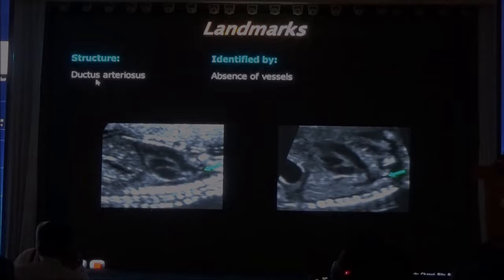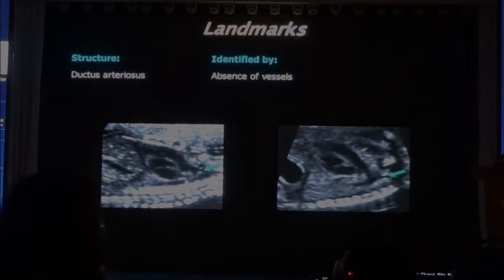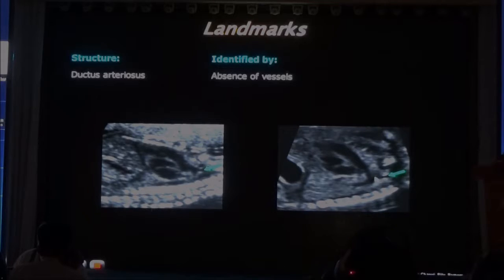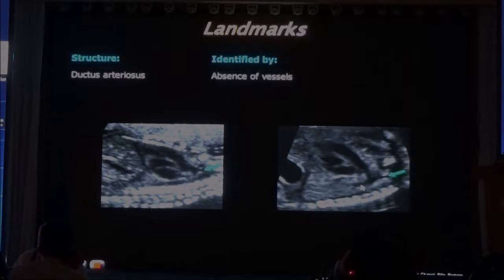Now, how do you recognize the ductus arteriosus from the aorta? Well, the ductus arteriosus has no vessels arising from it — except that from time to time in some sections you can see the left subclavian artery appearing to come from the ductus. It's actually coming from the aortic arch, but because of the slice thickness, it appears to come from the ductus. So don't get confused by that — that's a normal finding.